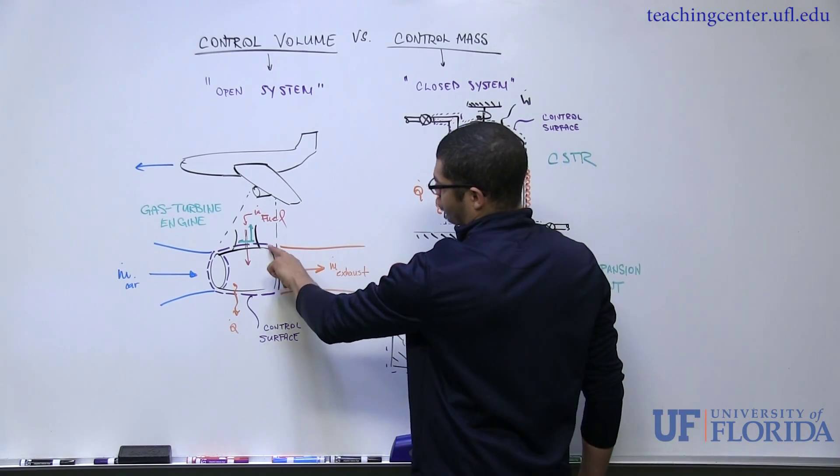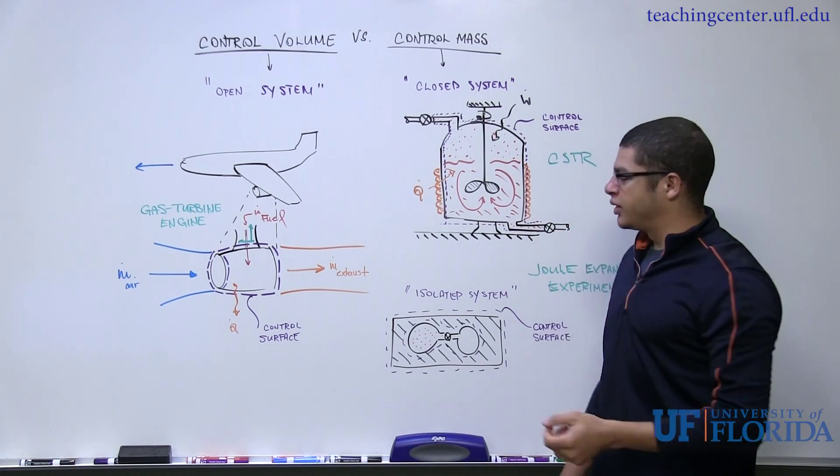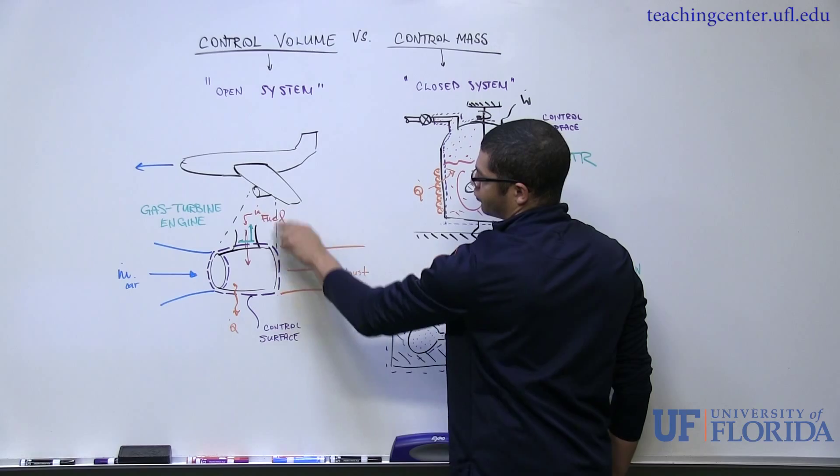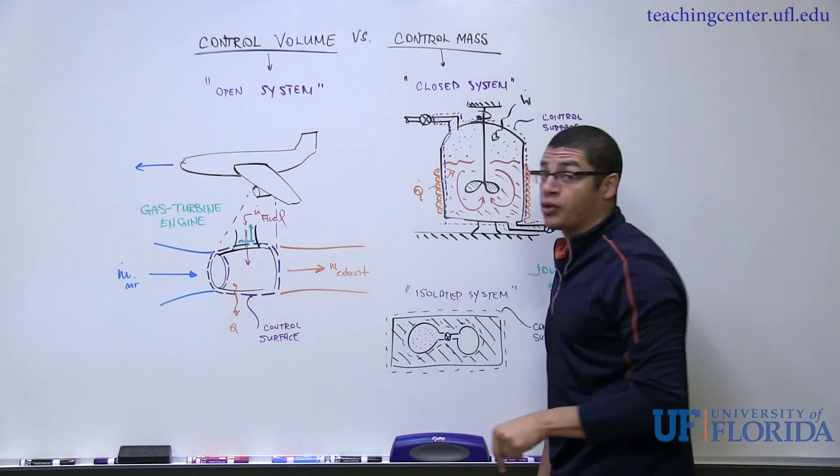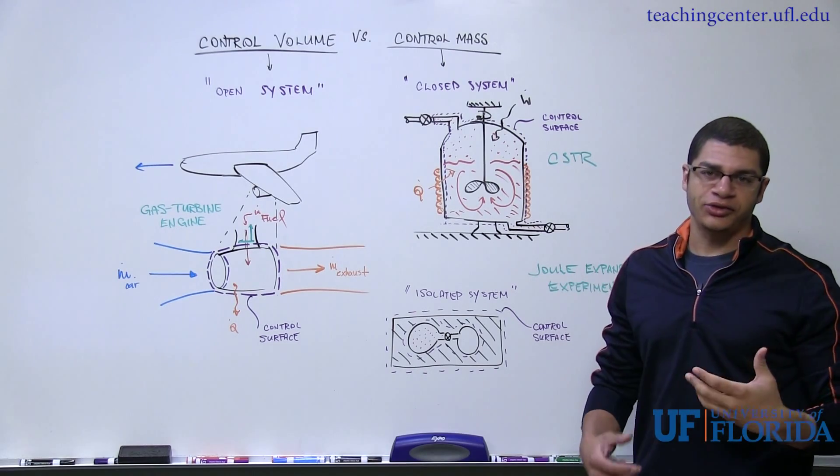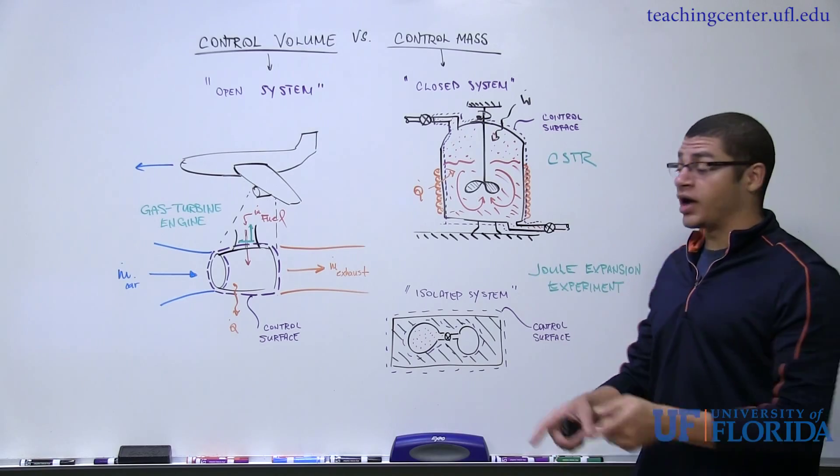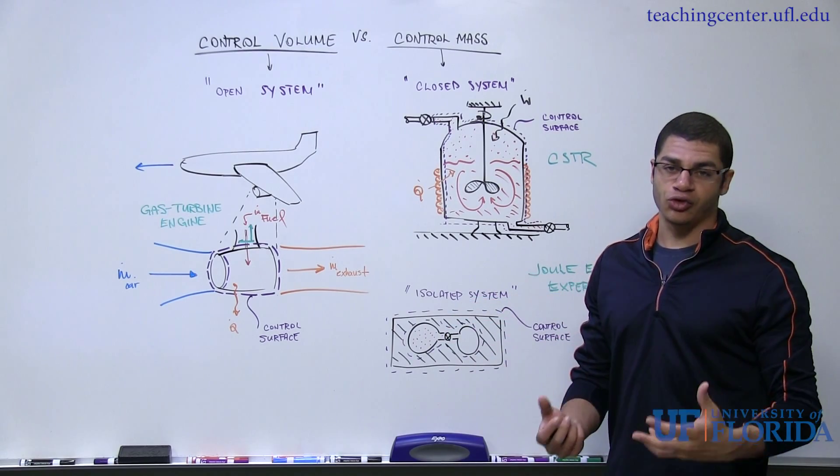Now, the way that I've drawn the control volume actually cuts through a structural component that would mount where the engine would mount to the wing structure. And because I've cut through this particular surface, there's going to be a few interactions there as well. So say if I were considering Newton's second law to be applied to this control volume, I would have to account for all the forces that act on the control volume.